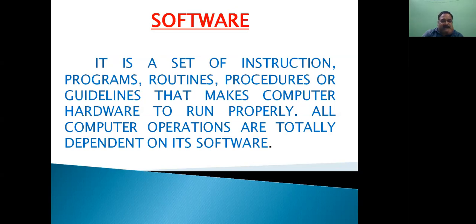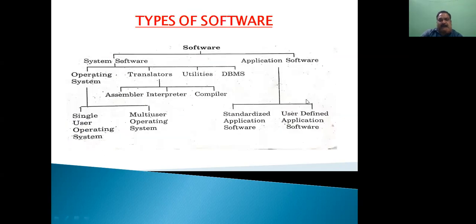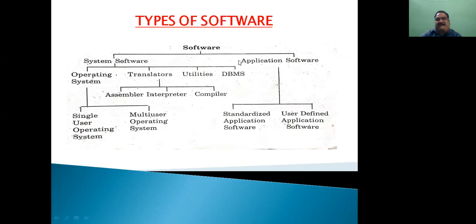So we can say that software is a set of programs. Now we will show you a diagram of the software. In this figure you will see that software is of two types: the first one is system software and the second one is application software.